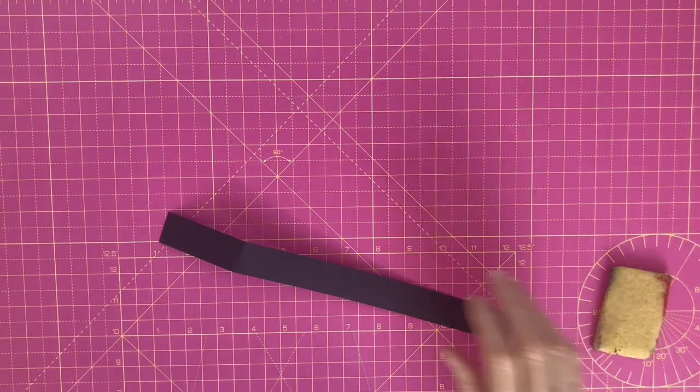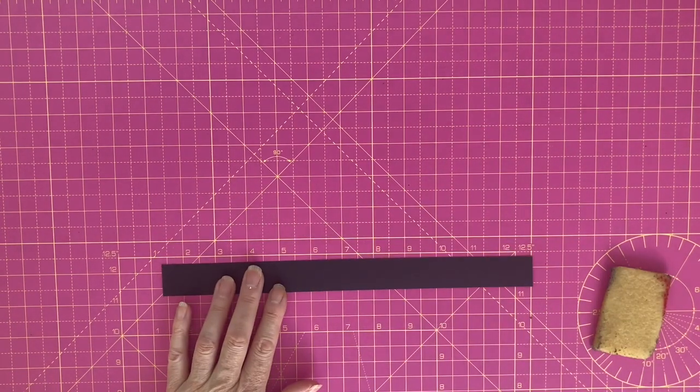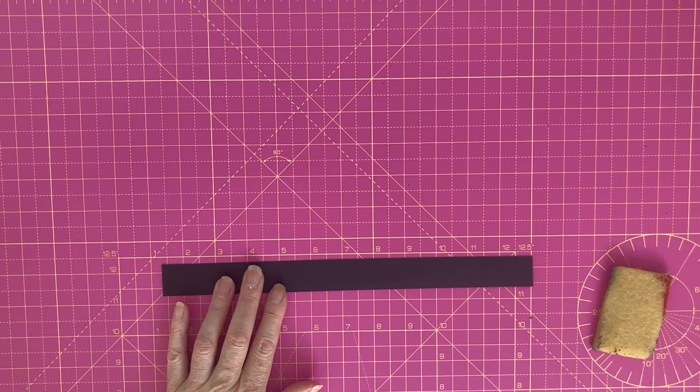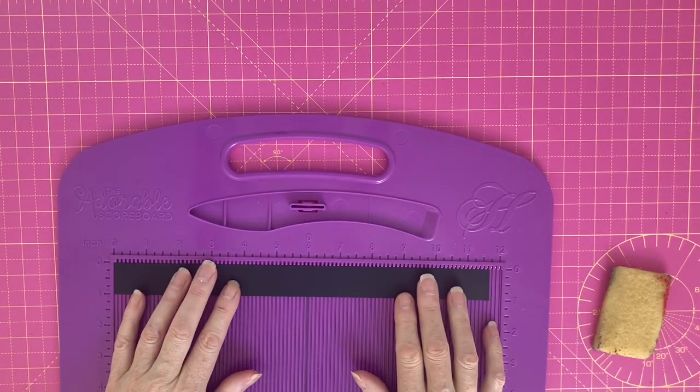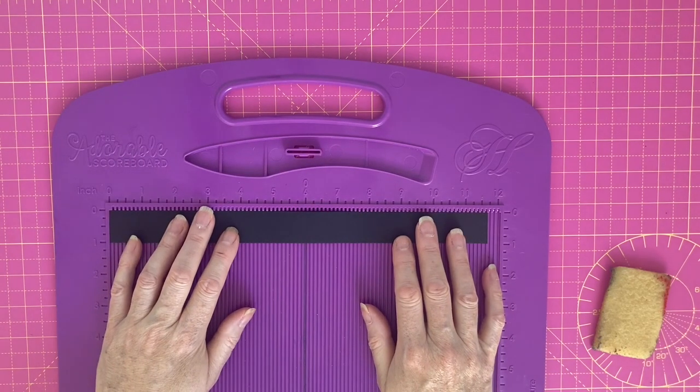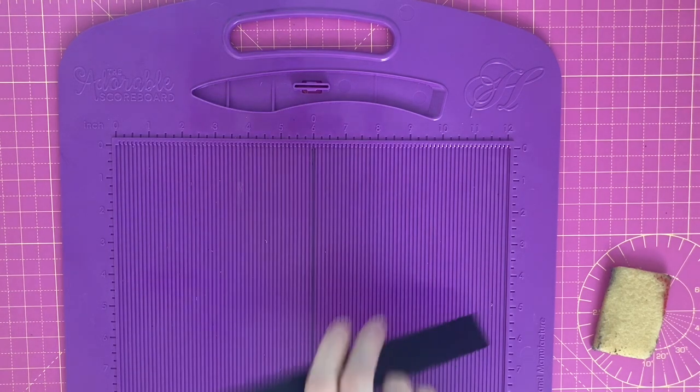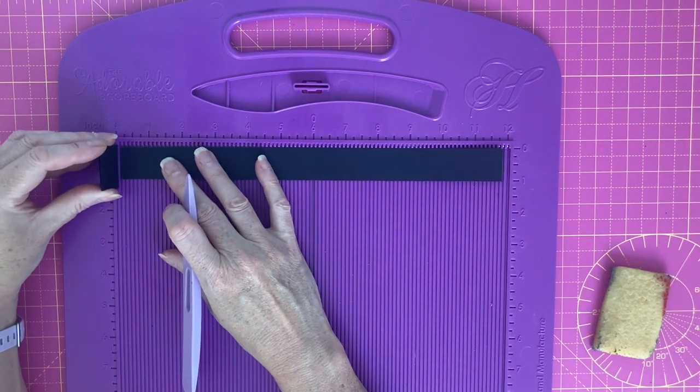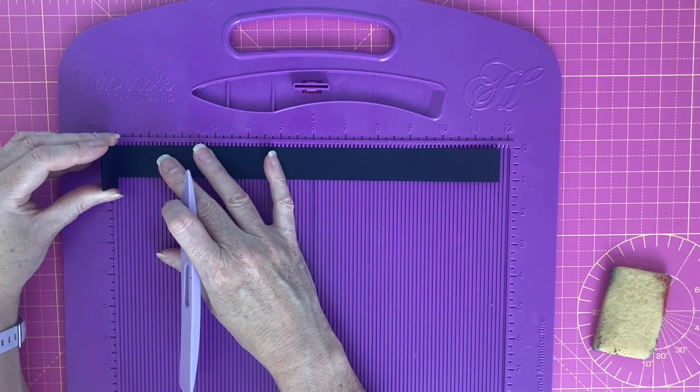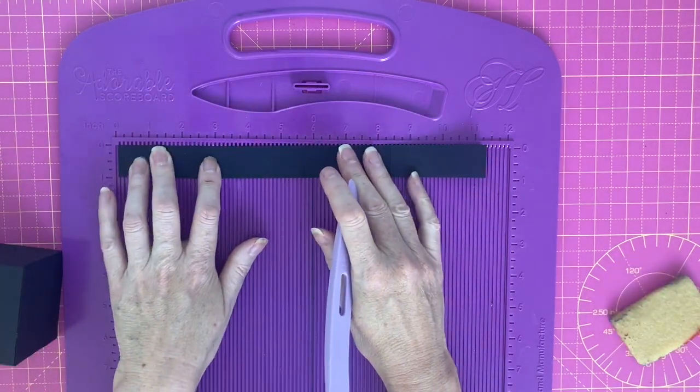So to create the plinth I've got a strip of paper which is one inch wide, it's the length of an A4 sheet. What I'm going to do is I'm going to use my piece of cardstock, I'm going to slot that in, put my card up against it and I'm just going to score it two and seven eighths.